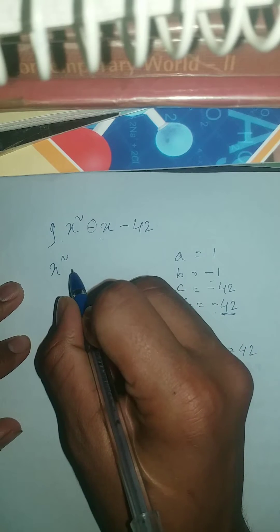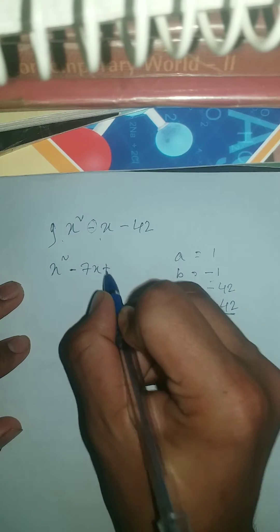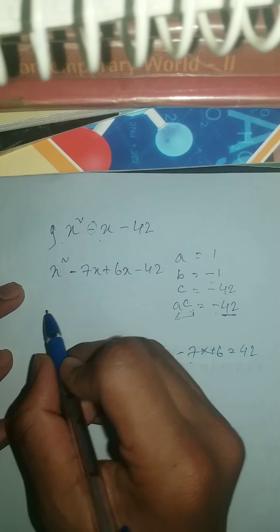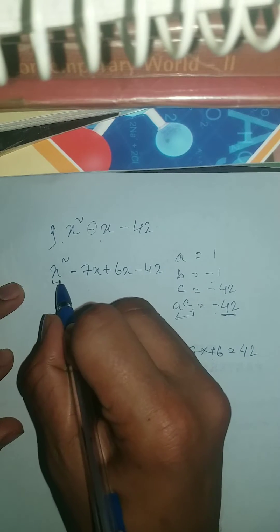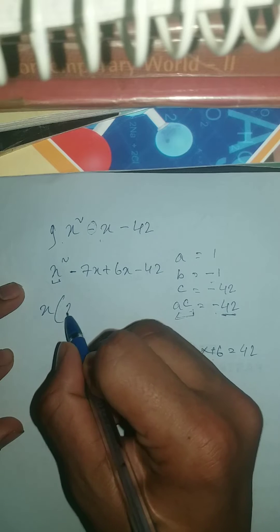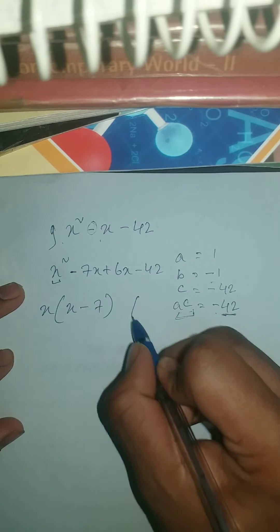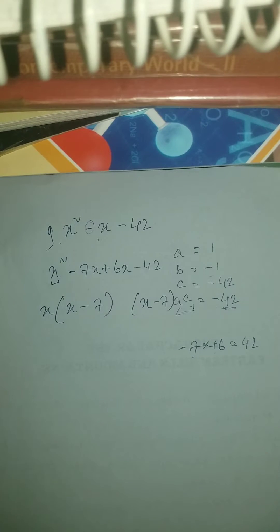Here we can write x squared minus 7x plus 6x minus 42. So here what we can write, we're gonna take the common, which is x, and x minus 7. Write it again, x minus 7, as I told you in the earlier video.